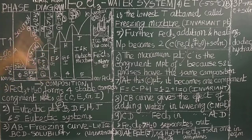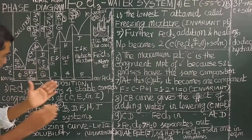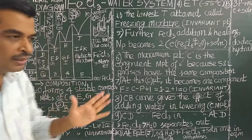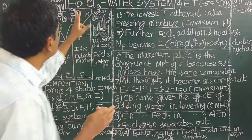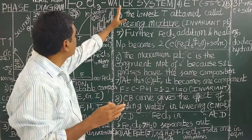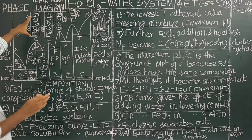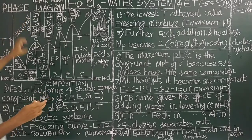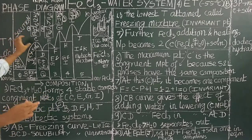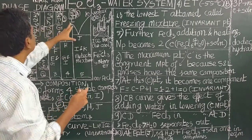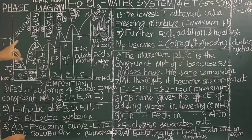It is a two-component congruent melting system. The two components — ferric chloride and water — combine to form four stable compounds. There are four congruent melting points, at points T, E, G, and I.